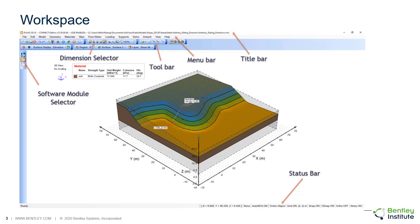The dimension selector controls the dimension in which the user views the model. The software module selector allows the user to select the current software module in which they are entering model design information. Typically, these buttons represent the front-end and back-end software modules. Finally, the status bar consists of controls for drawing and viewing objects in the workspace, which can greatly simplify the input of model geometry.